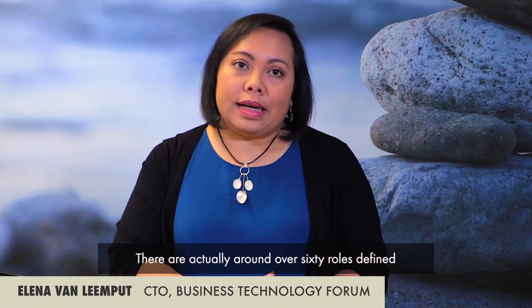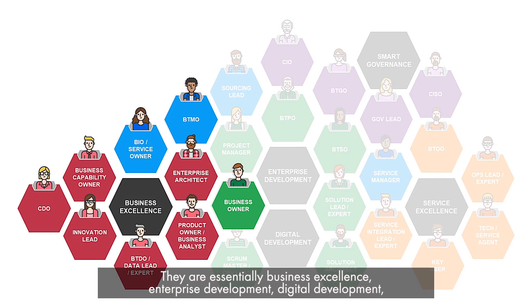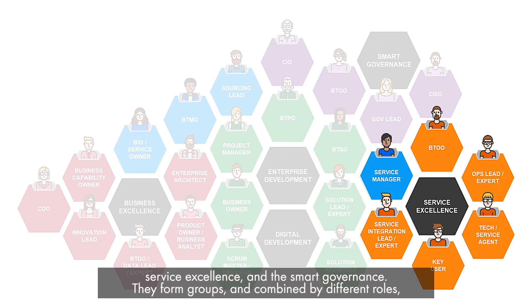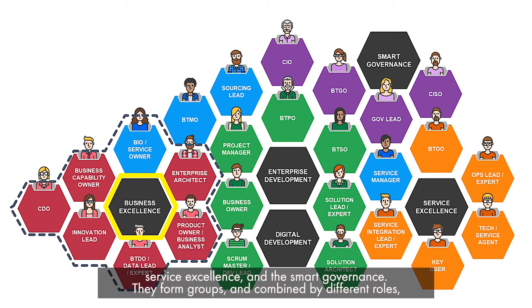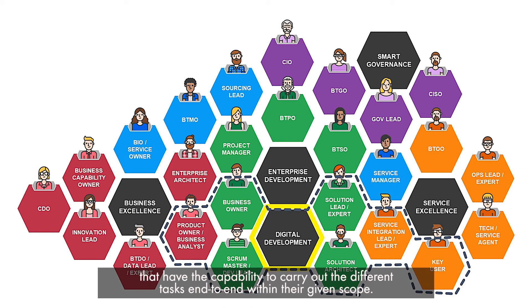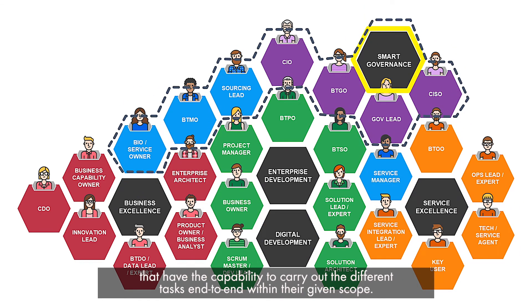There are actually over 60 roles defined in the Business Technology Standard. This roles and responsibilities deck has the description of the main roles. They are essentially business excellence, enterprise development, digital development, service excellence, and smart governance. They form groups combined by different roles that have the capability to carry out different tasks end-to-end within their given scope.